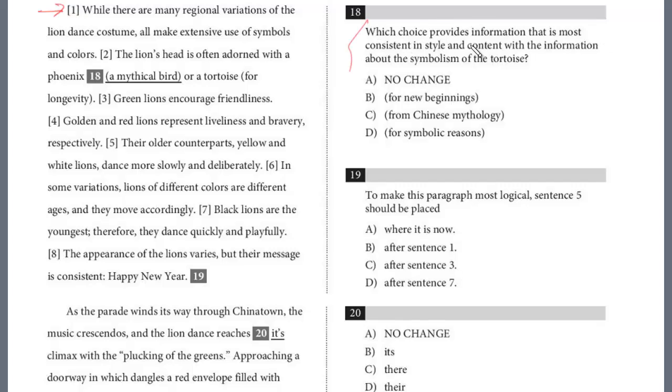So question 18, which choice provides information that's most consistent in style and content with the information about the symbolism of the tortoise? The tortoise is given. It's adorned with the tortoise because the tortoise represents longevity, long life. Is the fact that a phoenix is a mythical bird consistent? No. We want some purpose that the phoenix serves just like for longevity. If you look at the choices, it's definitely for new beginnings, right? Parallel structure.